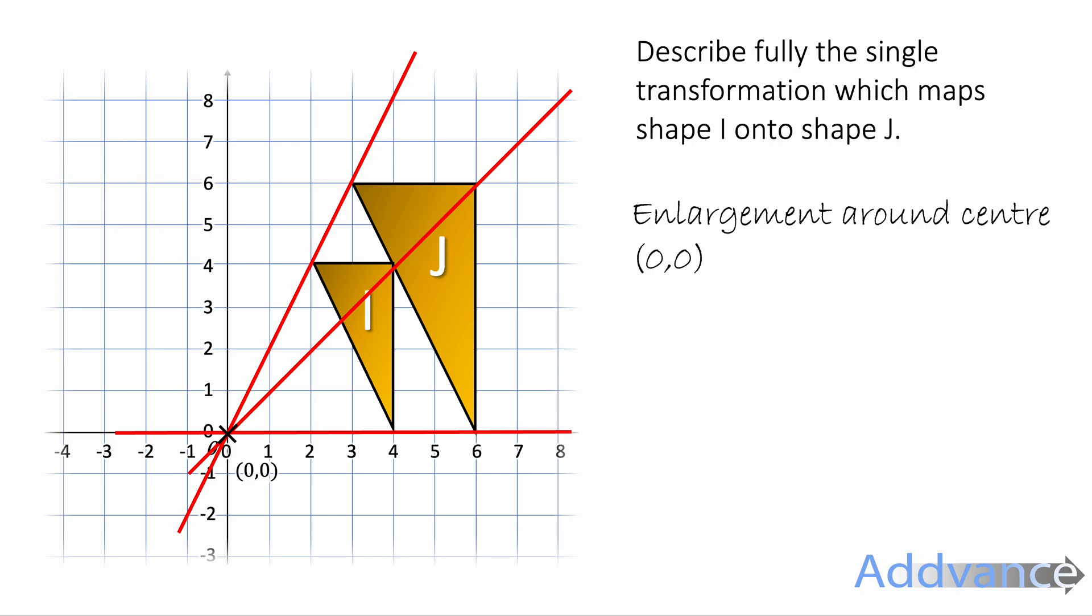So we know it's enlarged around centre 0, 0, but now we need to know the scale factor. So how much bigger is the second shape than the smaller shape? Well, the first shape is 4 tall and the second shape is 6 tall. So how much bigger is that? Let's do 6 divided by 4 and that gives us 1.5. The scale factor is 1.5.